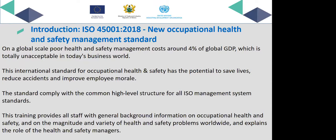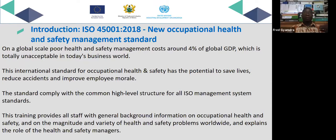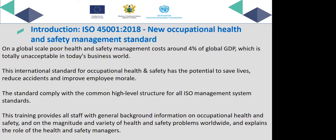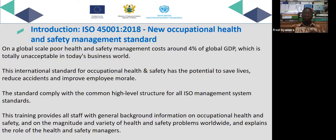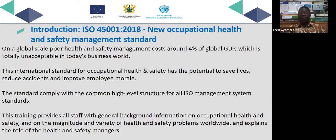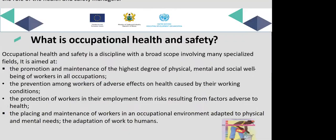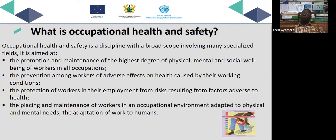On the global scale, poor health and safety management costs around 4% of the global GDP, which is unacceptable. ISO 45001 is the standard that contains all the requirements for organizations or companies to comply with, so that they'll be able to come out with a proper and robust health and safety system to protect their workers. It follows the same high-level structure as any other management system, like the environmental management system or the quality management system.